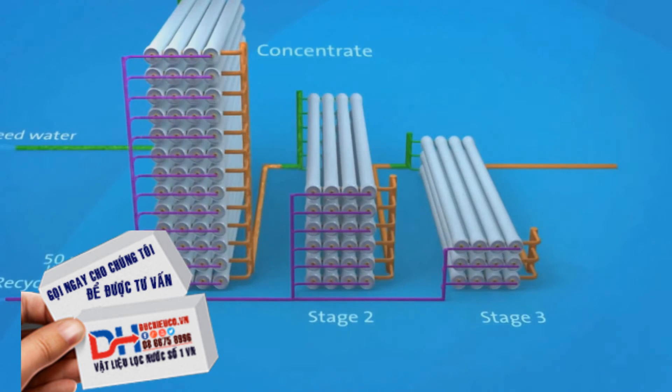65% of recycled water is extracted at Stage 1. The remaining 35% is passed through Stage 2, where a further 10% is extracted. The final 25% is passed through Stage 3, where the last 5% of recycled water is extracted.